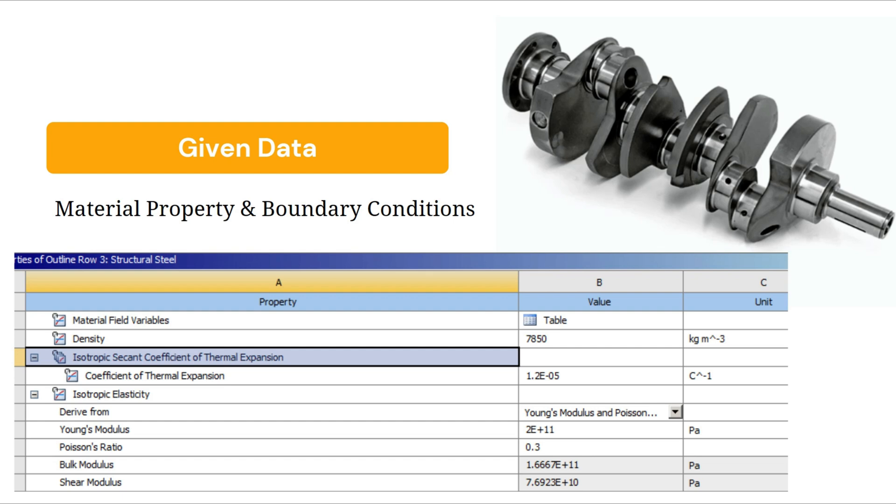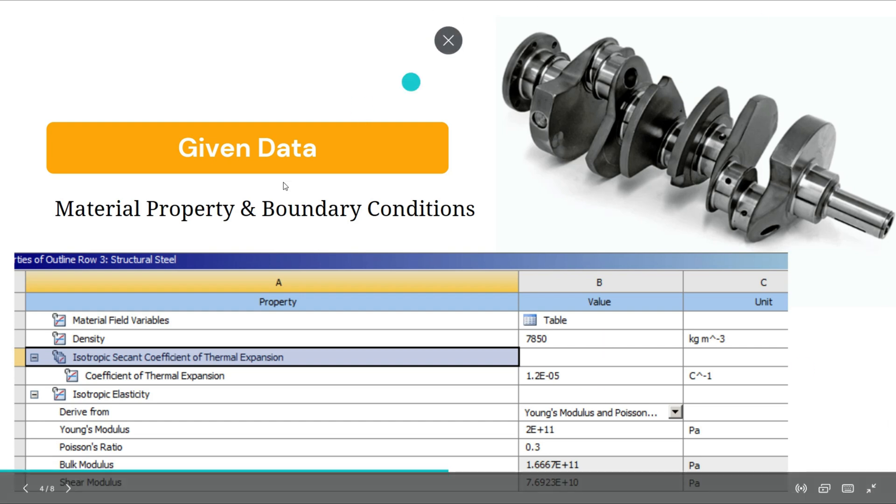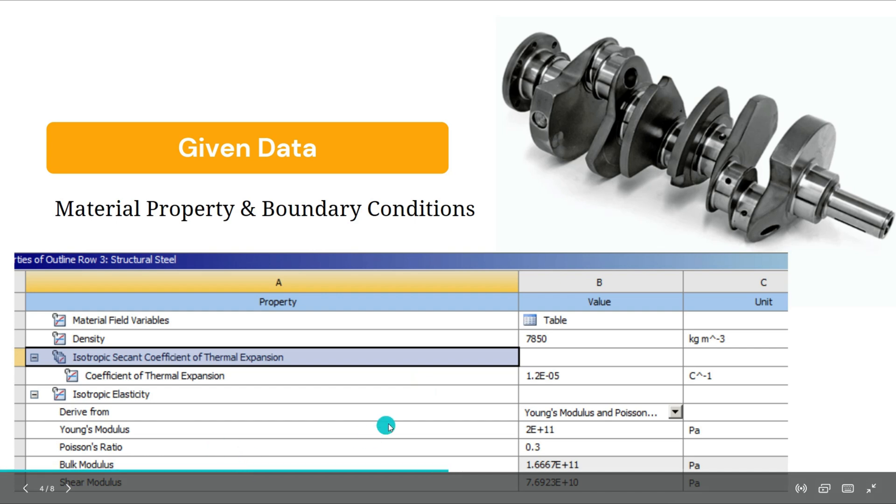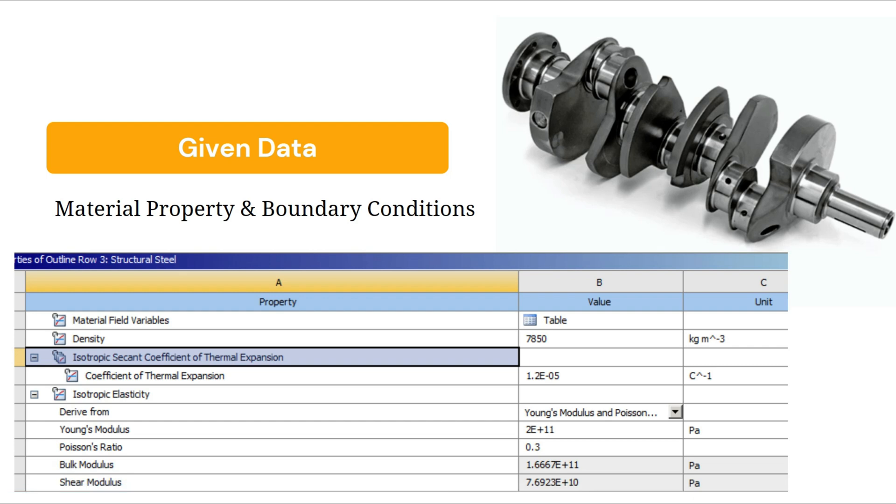In this problem we have taken the engineering data for structural steel. This is the ideal case of a crankshaft and we are going to take the material property of structural steel with the values of Young's modulus, Poisson's ratio, bulk modulus, shear modulus. All values are given below. You can check and pause the video here and note down for your further instructions. These are the given data for our problem on which we are going to solve in ANSYS.